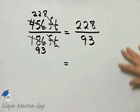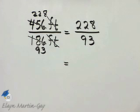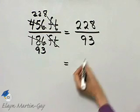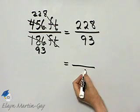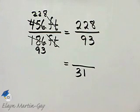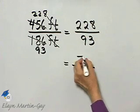I'm still trying to write this ratio in simplest form and I believe there's a common factor now of 3 that I did not see earlier. 93 divided by 3 is 31 and 228 divided by 3 is 76.